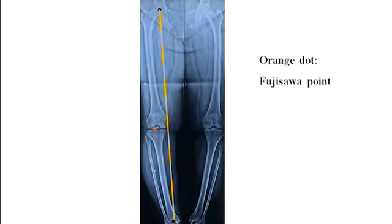The next step is to identify Fujisawa's point, which lies on the proximal tibial line at 62.5% away from the medial edge of the tibial plateau. Approximately, it lies close to the lateral edge of the tibial spine.